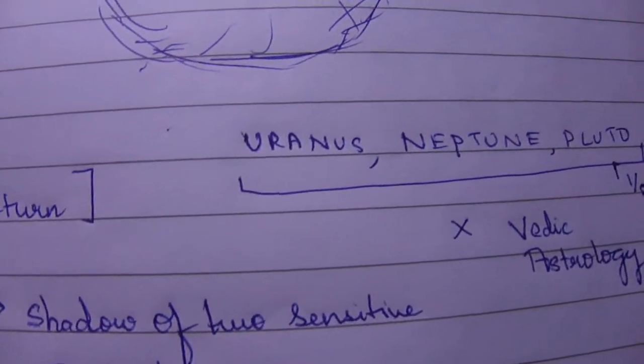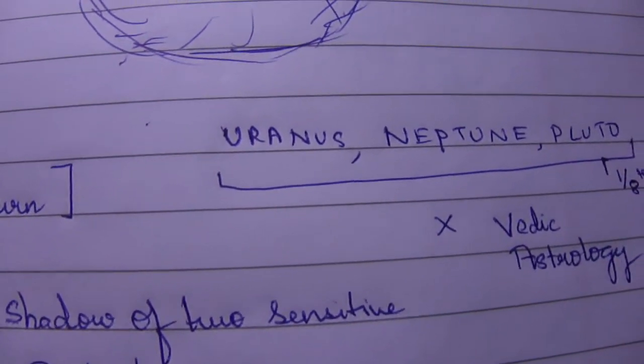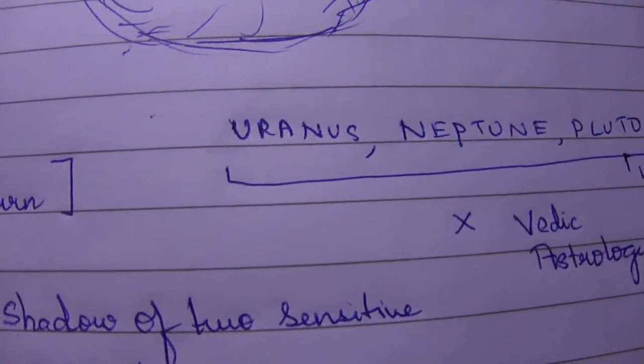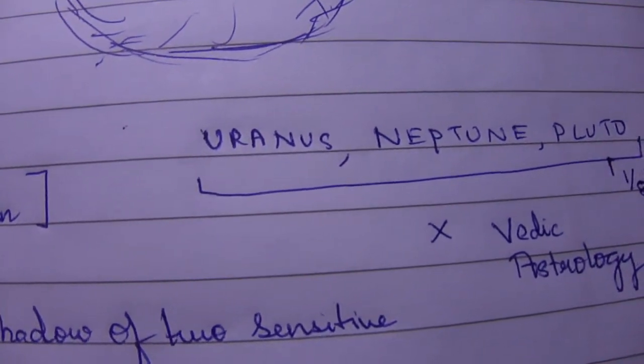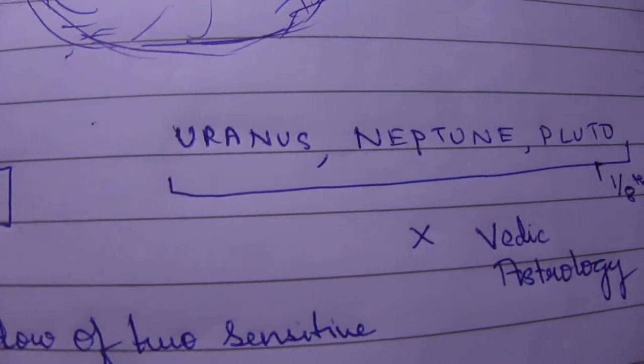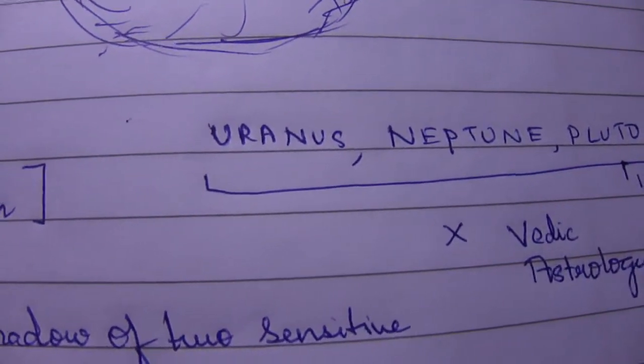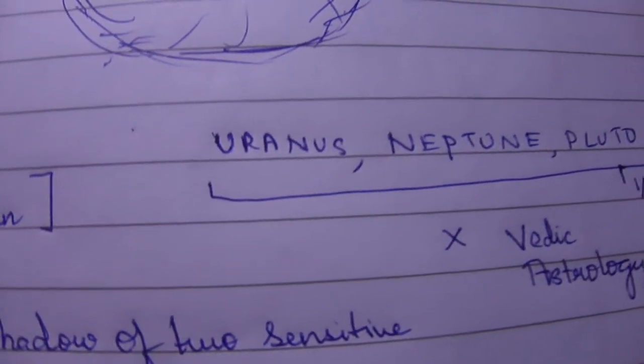They are considered in modern-day astrology, but in Vedic astrology we do not consider their influence. They are very small in size and very far from Earth. Rahu and Ketu are not planets but shadow points.